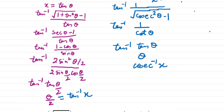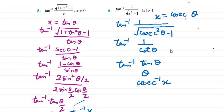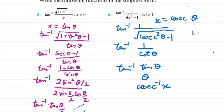To summarize: for question 5 with 1+x², we took x = tanθ and got the answer tan⁻¹(x)/2. For question 6 with x²−1, we took x = cosecθ, got cotθ under the root, which simplified to tanθ, giving θ = cosec⁻¹(x) as the final answer.